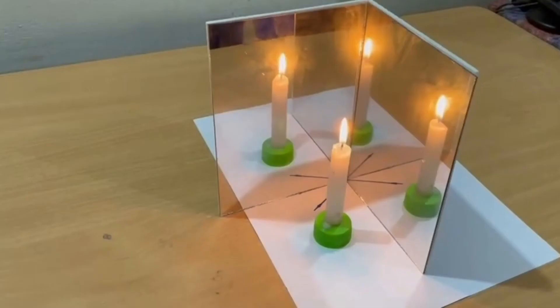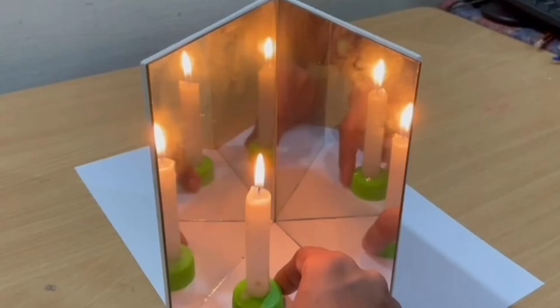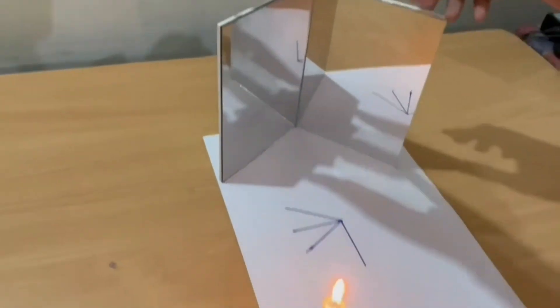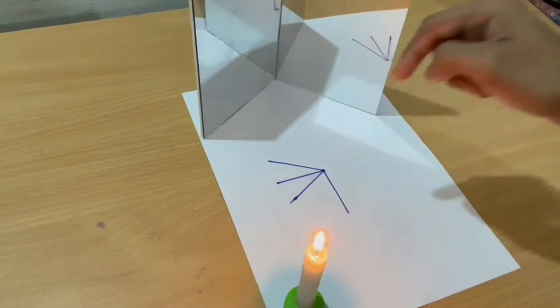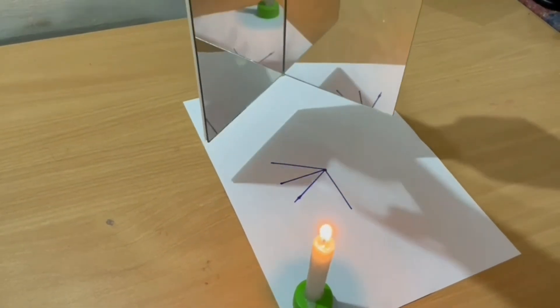Today we will see an activity to show the formation of multiple images by two plane mirrors. Take two plane mirrors and set them at certain angles. Place a lighted candle in between these mirrors.